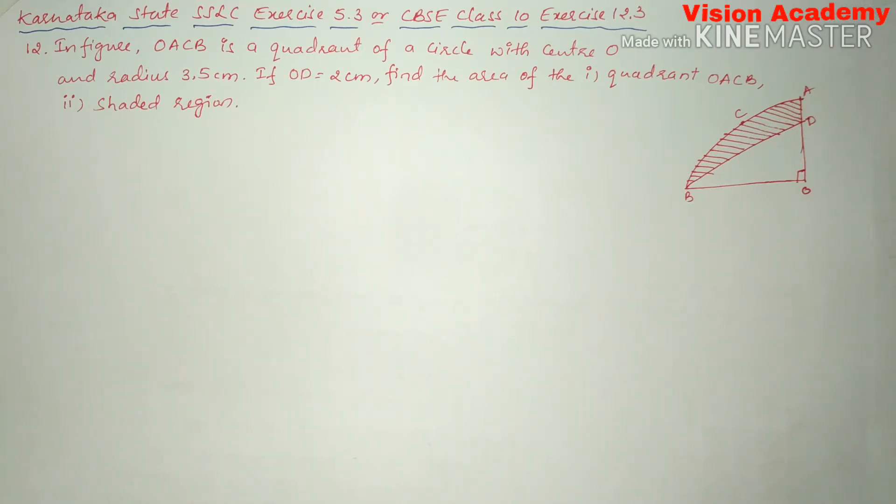In the figure, OACB is a quadrant of a circle with center O and radius 3.5 cm. If OD is equal to 2 cm, find the area of the shaded region.